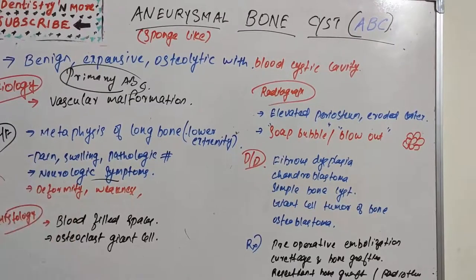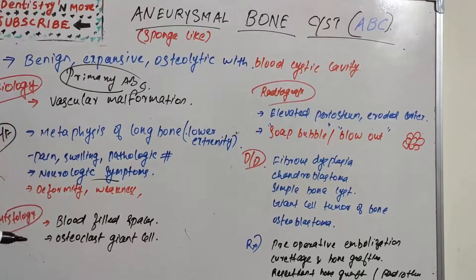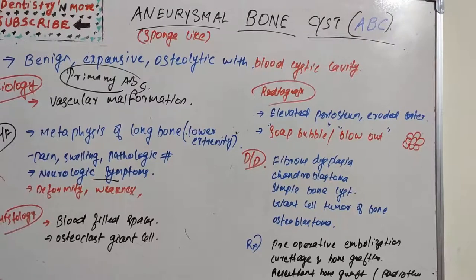Histologically, ABC consists of blood-filled spaces of variable size separated by connective tissue containing trabeculae of bone or osteoid tissue and osteoclast giant cells. These spaces are notably not lined by endothelium.